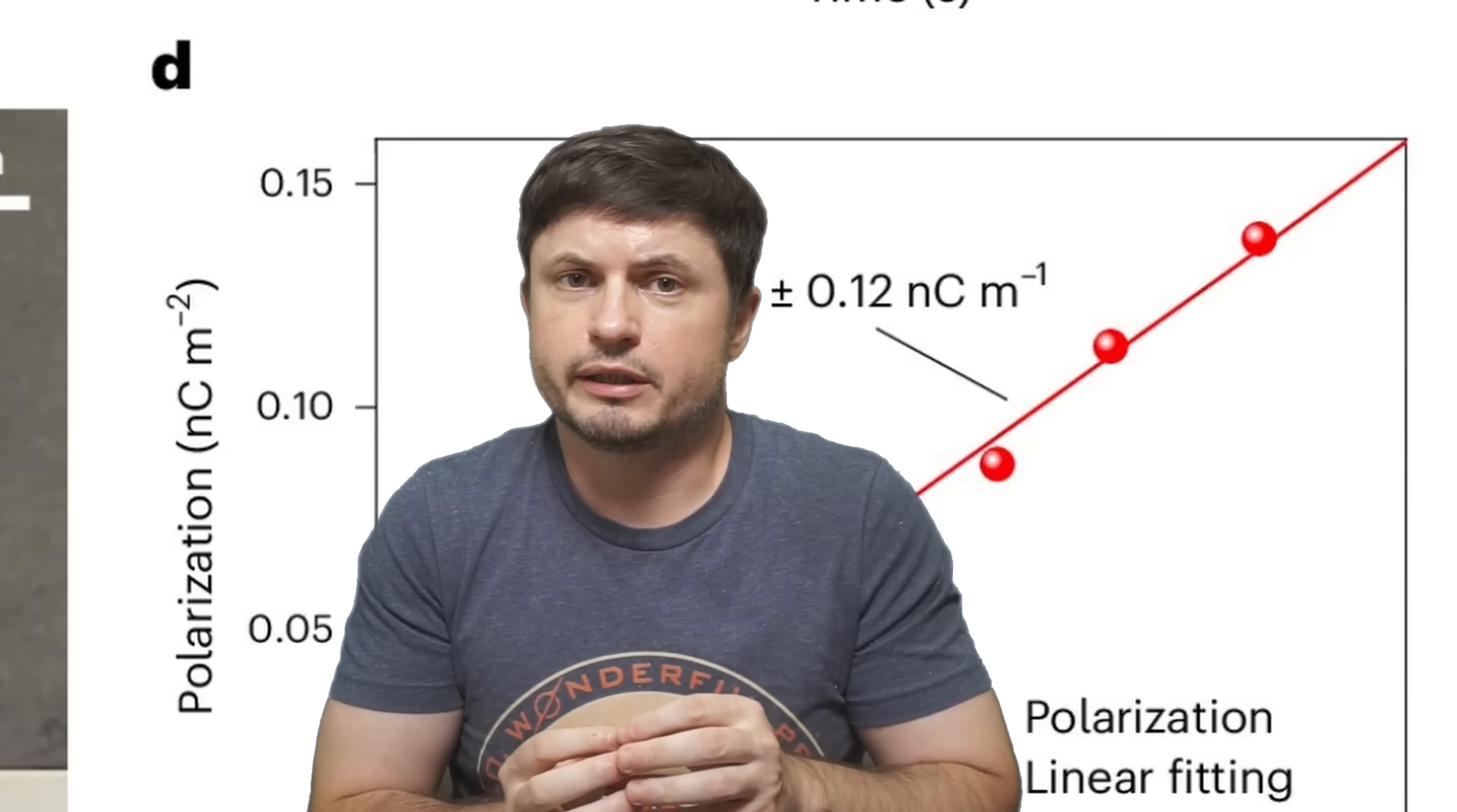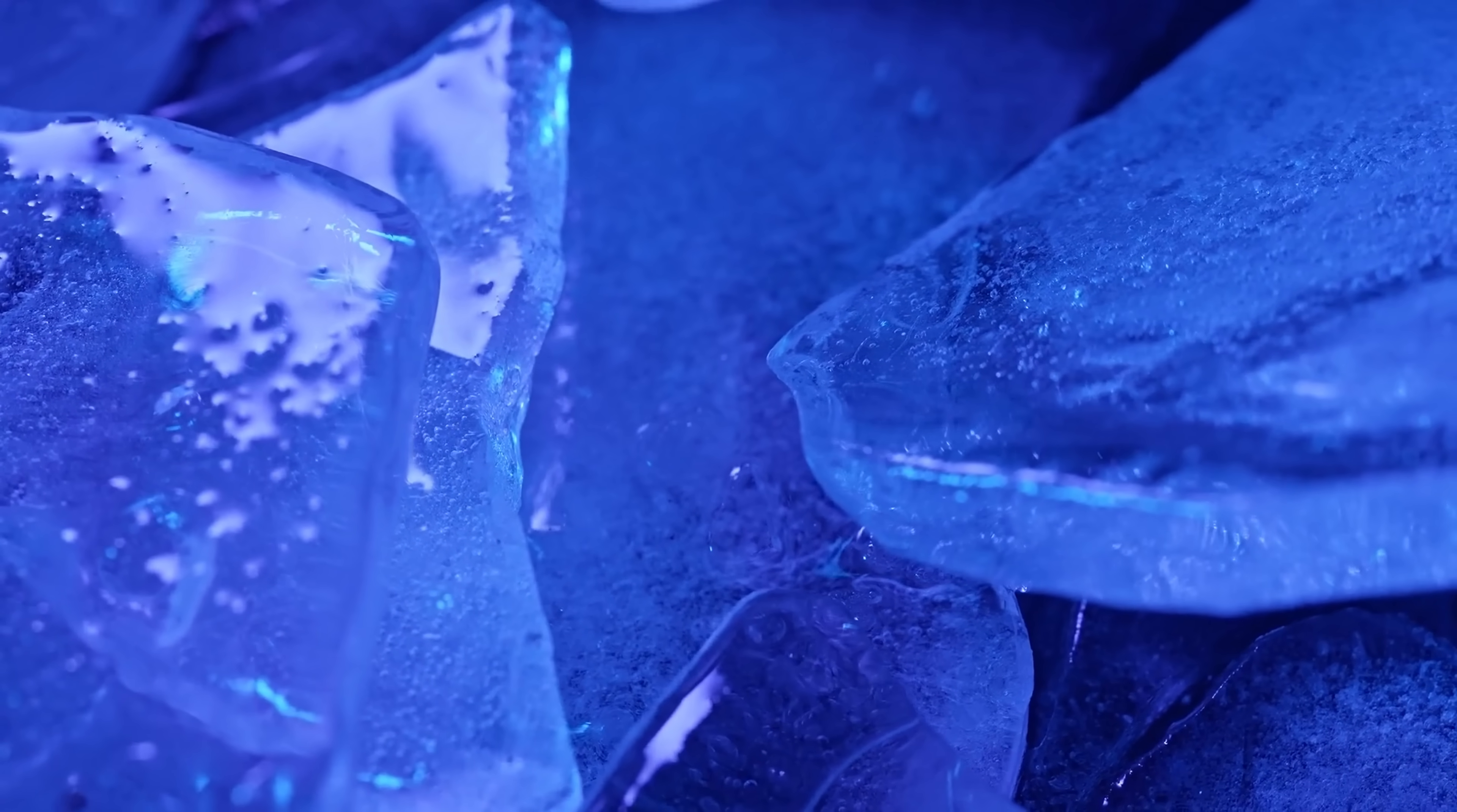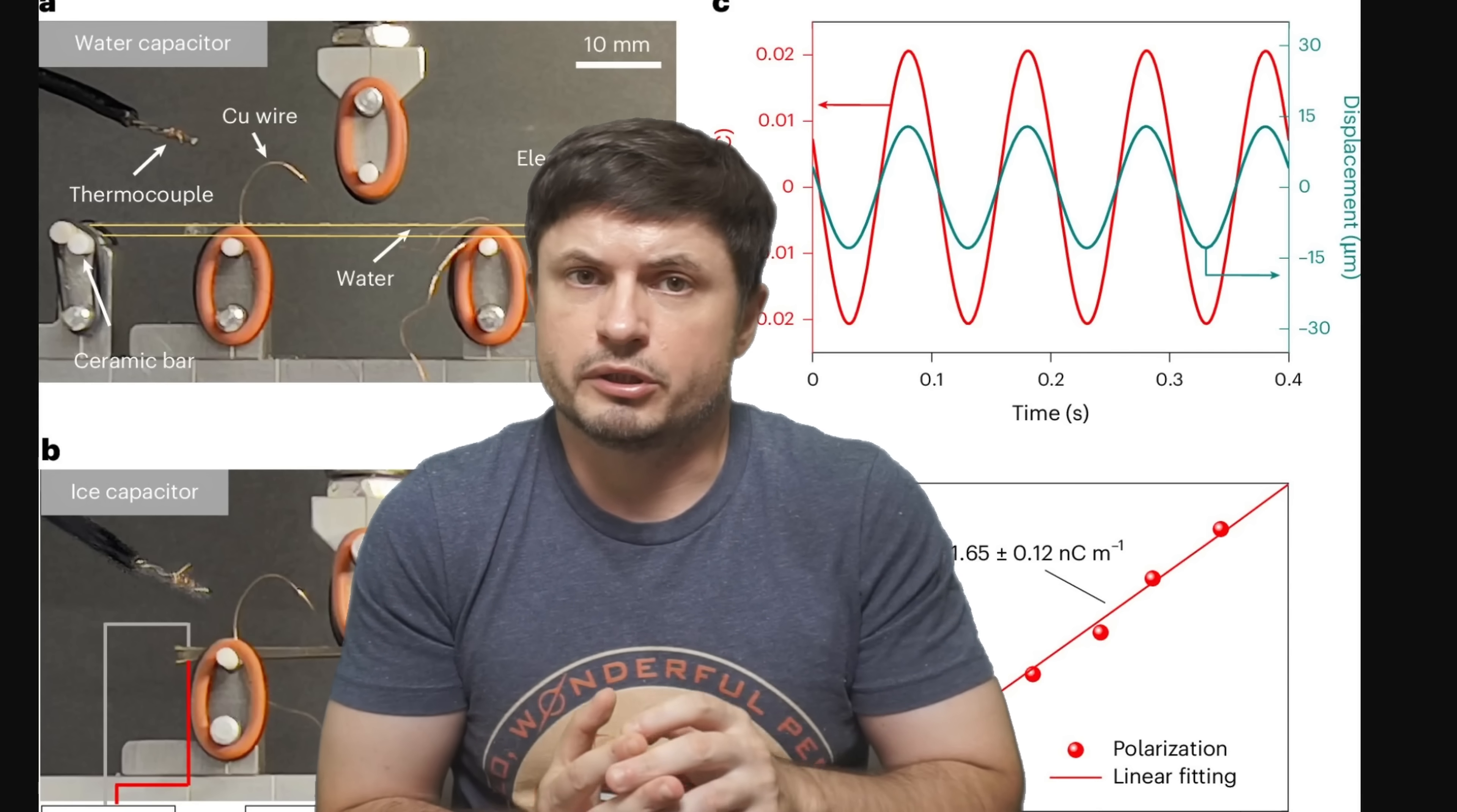But in this case the discoveries didn't stop here. Because researchers also decided to vary the temperature in order to observe how these effects change over time. And surprisingly, they discovered some kind of an unexpected anomaly that seems to happen at much lower temperatures, around 160 Kelvin or minus 113 degrees Celsius, which is minus 170 Fahrenheit.